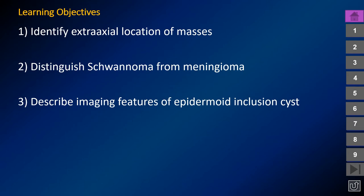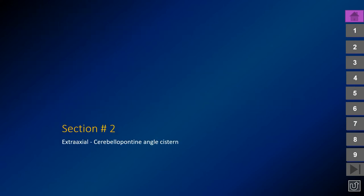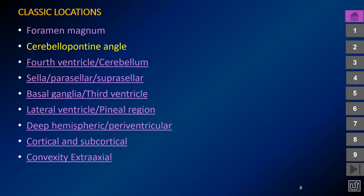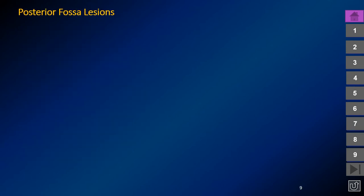Our learning objectives are to identify extraaxial location of masses, to distinguish schwannoma from meningioma, and to describe the imaging features that distinguish epidermoid inclusion cysts from other posterior fossa masses. Let's begin by talking about extraaxial lesions in the cerebellopontine angle cistern of the posterior fossa.